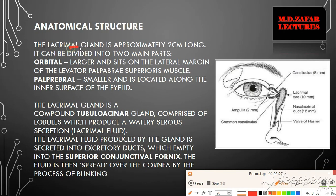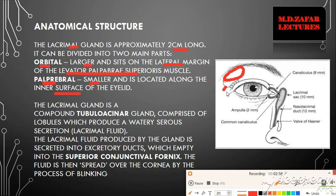The lacrimal gland is approximately 2 cm long and has two parts: orbital and palpebral. The orbital part is larger and sits on the lateral margin of the levator palpebrae superioris muscle, present supralaterally over that muscle. The palpebral part, which is smaller, is located along the inner surface of the eyelid.